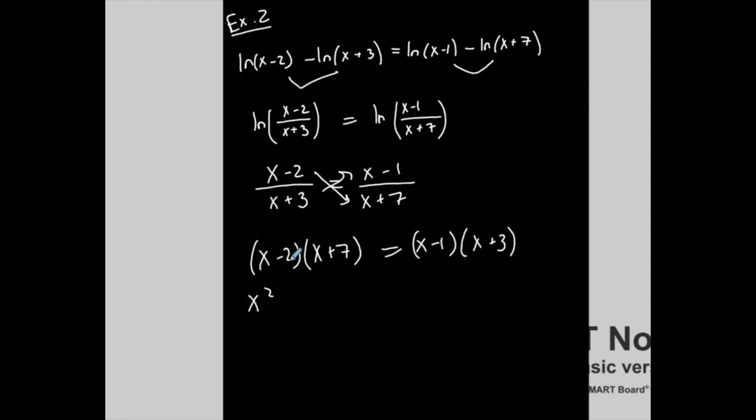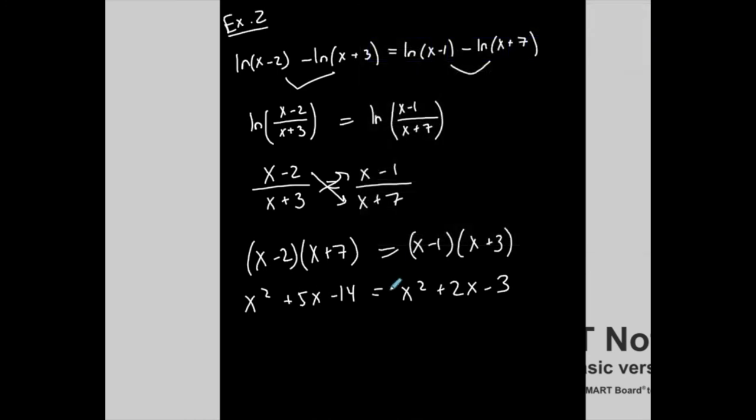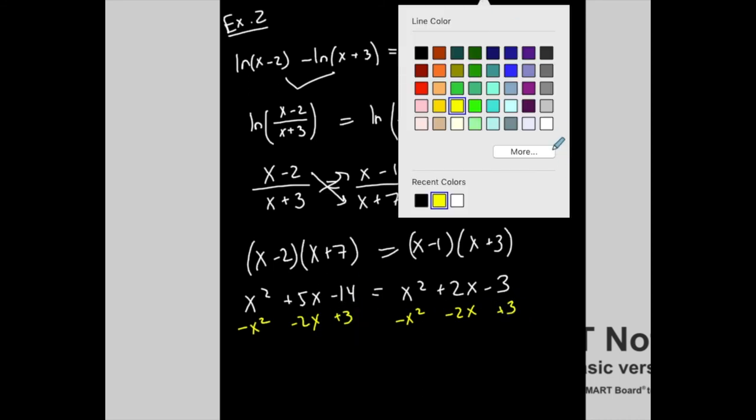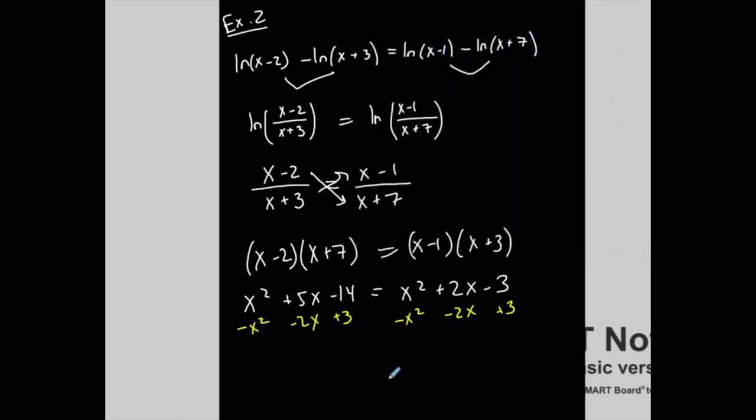FOIL: x squared negative 2x plus 7x is positive 5x minus 14 is equal to x squared positive 3 minus 1 plus 2x minus 3. I like these. These really make it nice because quadratic equations you're always wanting to set equal to zero. But when I subtract x squared from both sides, that goes away. Subtract 2x from both sides and add 3. It becomes a very basic linear equation.